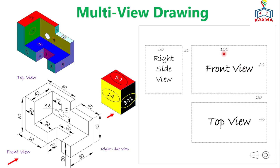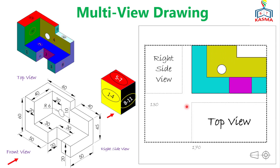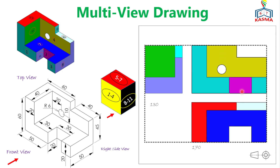The top view height equals the depth of the object, which is 50mm, and its width matches the front view width. The right side view width also equals the depth of the object — 50mm. So the overall rectangle is 170mm horizontally and 130mm vertically when you sum all dimensions and gaps.